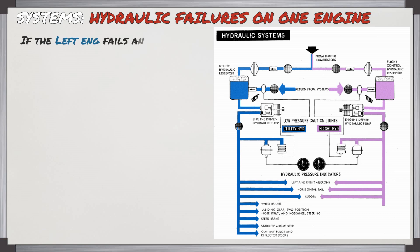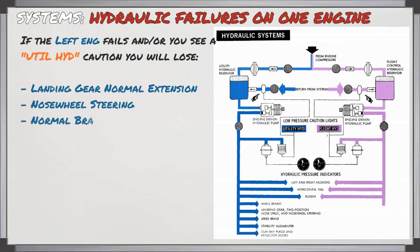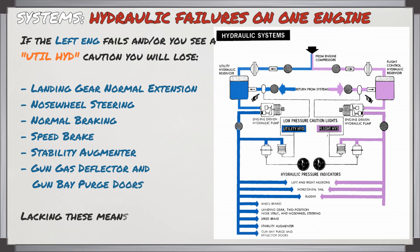If you lose the left engine or get a utility hydraulic caution, this is when you start losing a lot of different things: landing gear normal extension, nose wheel steering, normal braking, the speed brake, the stability augmenter, and the gun gas deflector and gun bay purge doors. When you lose a bunch of these items it's going to affect how you make your approach for landing.